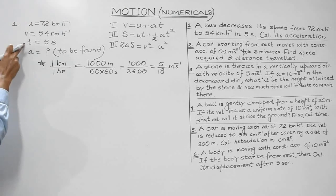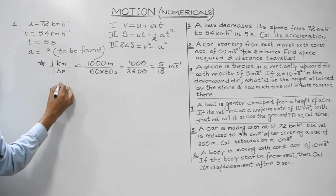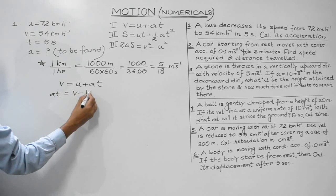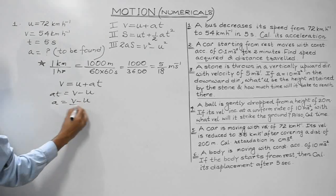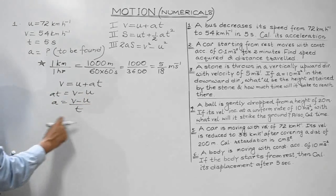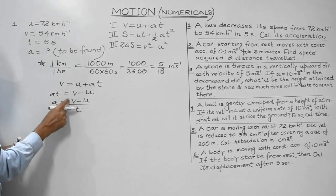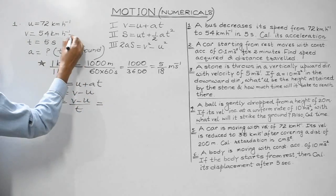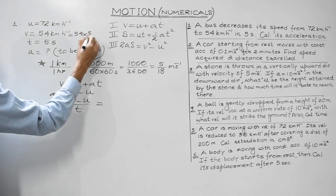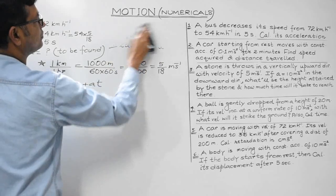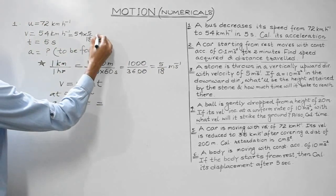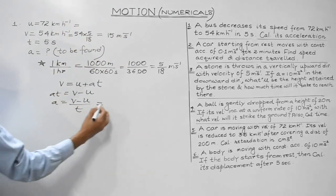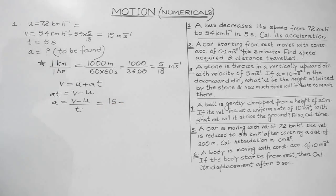Using the first equation of motion, v = u + at, we get a = (v - u) / t. Converting: v = 54 × (5/18) = 15 m/s. And u = 72 × (5/18) = 20 m/s.